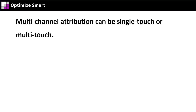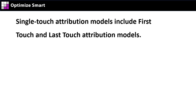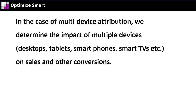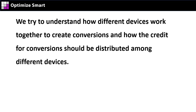Multi-channel attribution can be single touch or multi-touch. Single touch attribution models include first touch and last touch attribution models. Multi-touch attribution models include time decay, linear, position-based, and data-driven attribution models. In the case of multi-device attribution, we determine the impact of multiple devices on sales and other conversions, and try to understand how different devices work together to create conversions and how the credit for conversions should be distributed among different devices.